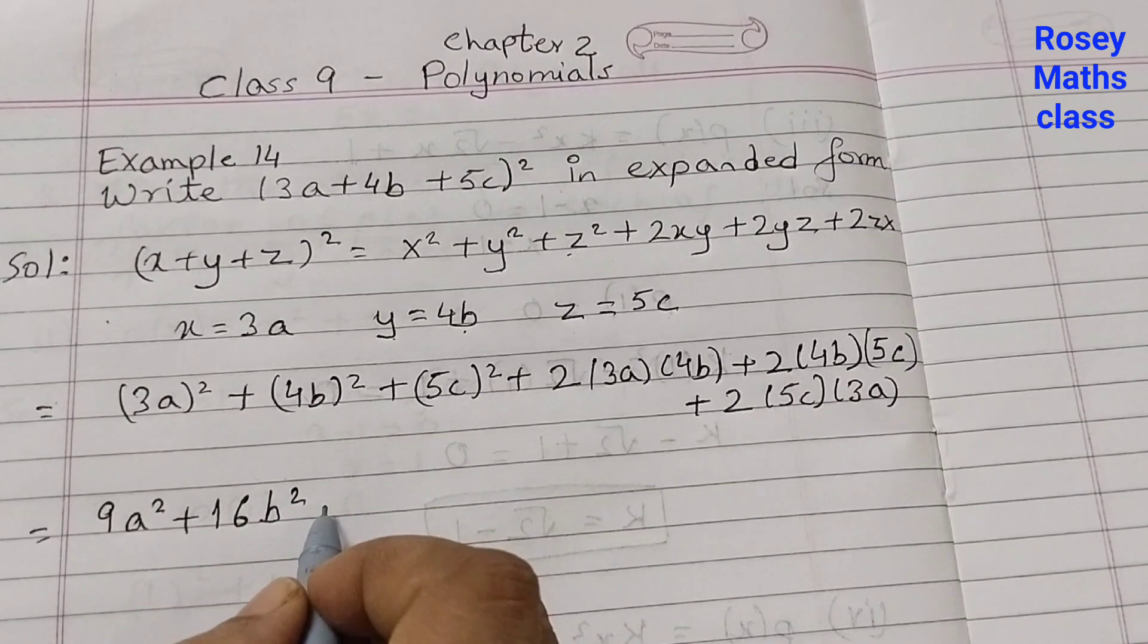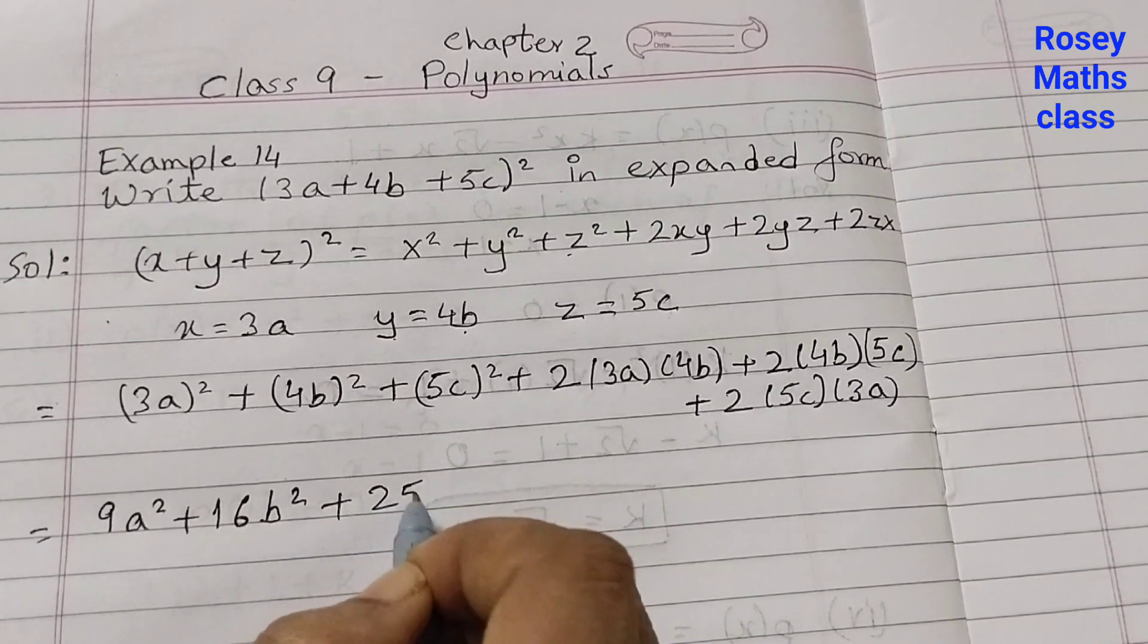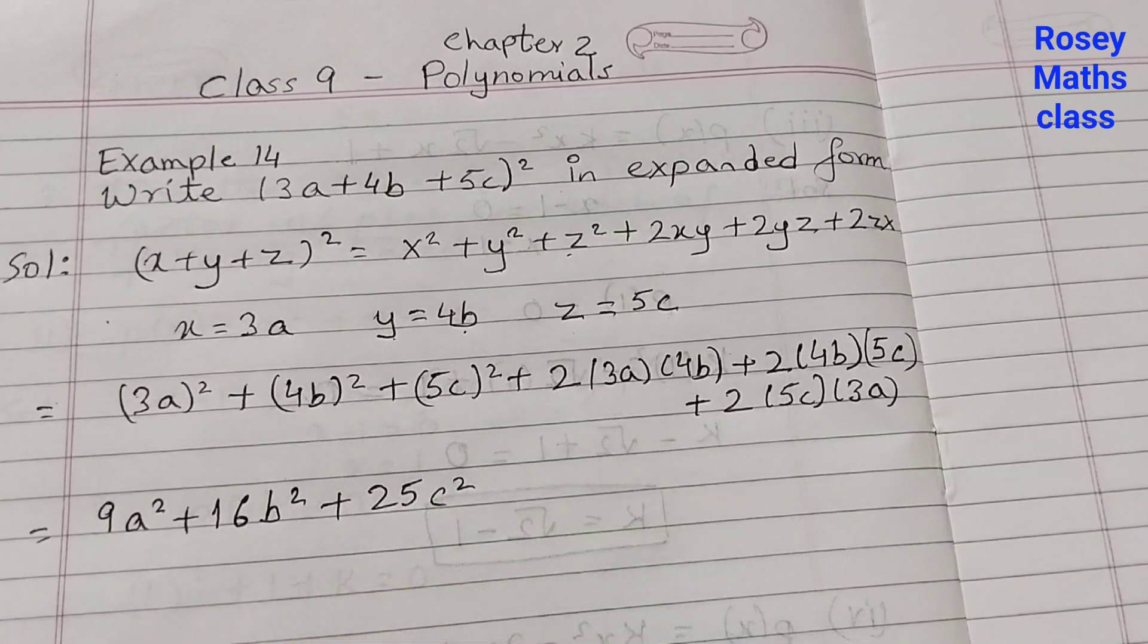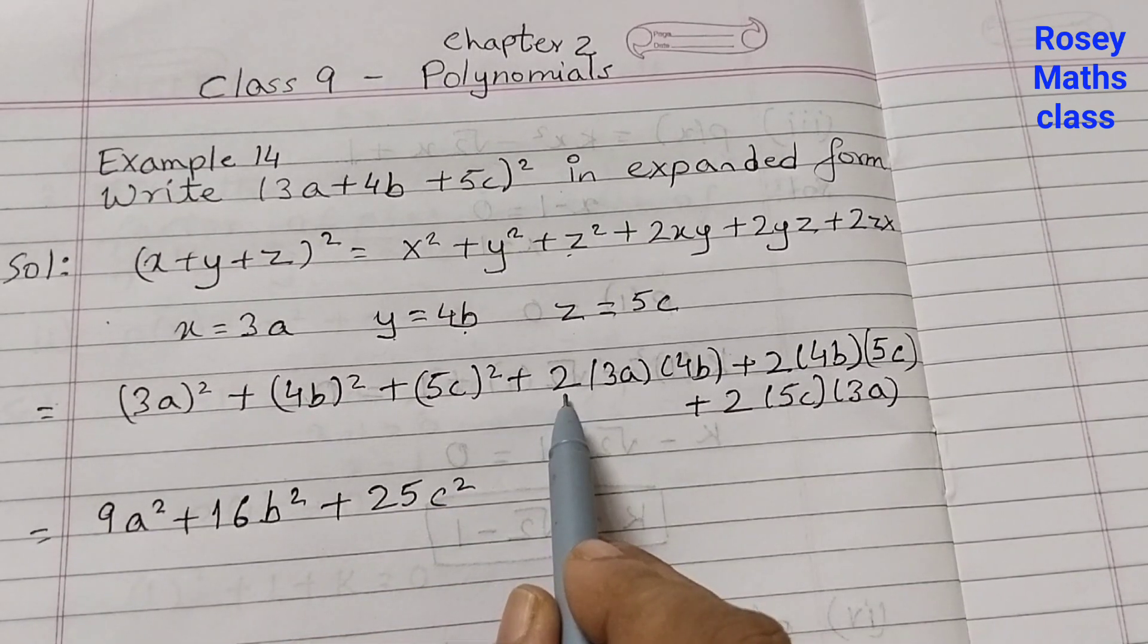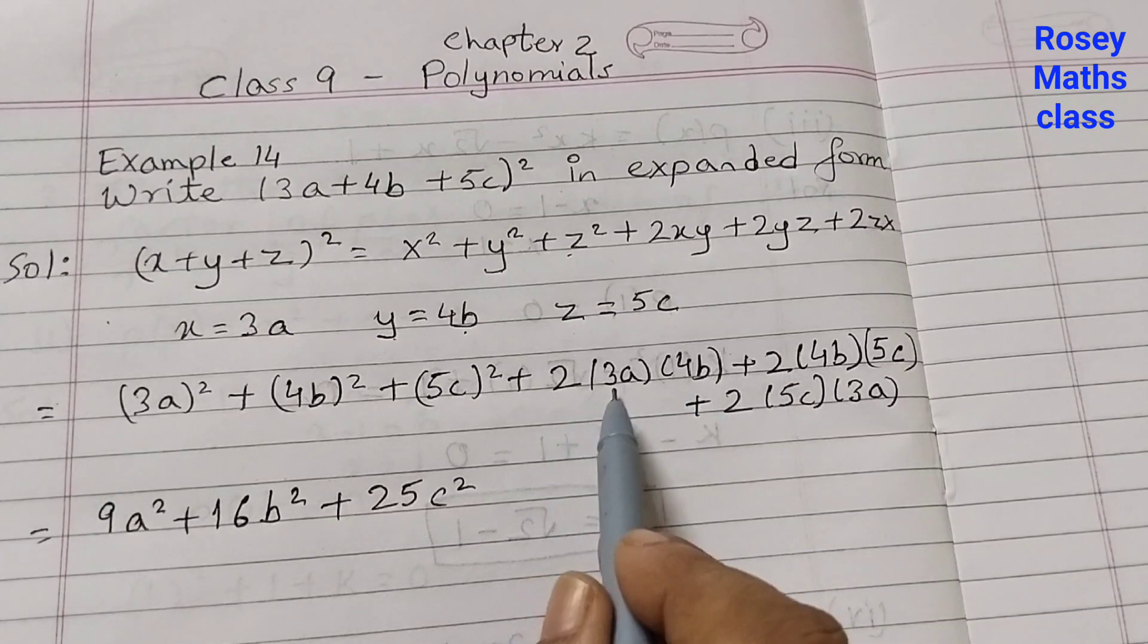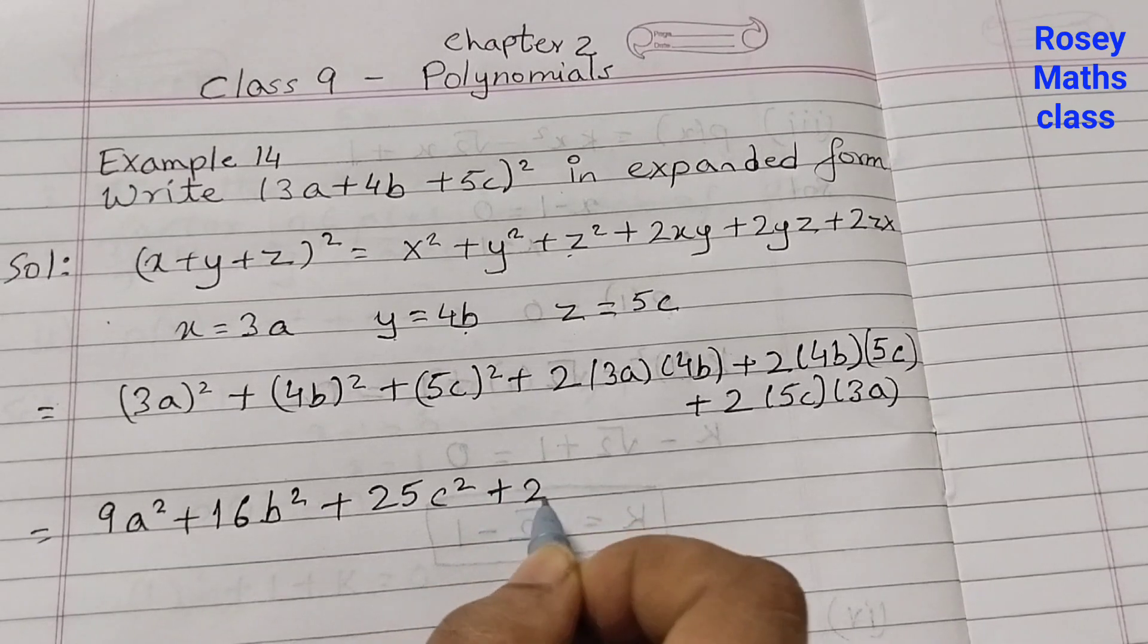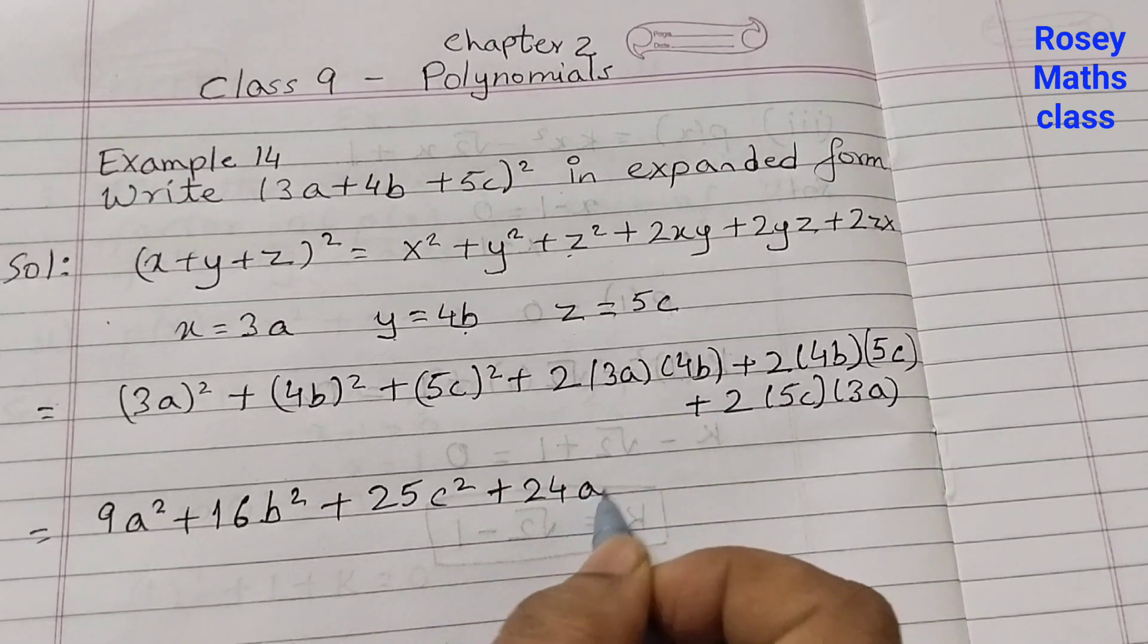Here we have three terms together: 2 into 3a into 4b. So 2 times 3 is 6, 6 times 4 is 24, so plus 24ab.